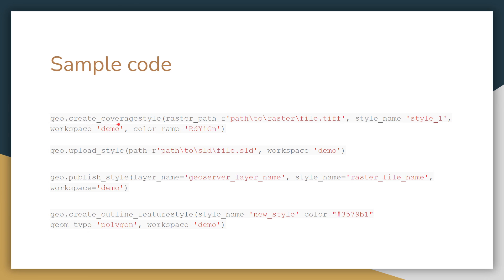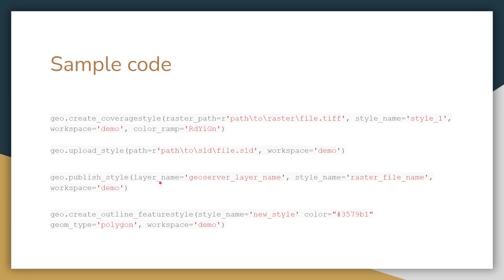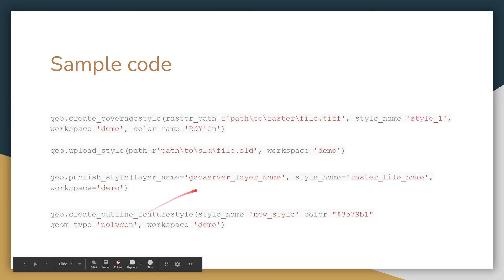After that, we can create a coverage style — that means creating the style file for raster data. We just pass some parameters like the raster path and it will automatically read the raster file and create the style file accordingly. We can also specify the style name, workspace name, and color ramp; the style file will be automatically generated based on the color ramp. We can also upload a style by passing a path to an SLD file and specifying the workspace, then publish the style. The same process applies for feature styles — we can create and publish feature styles as well.